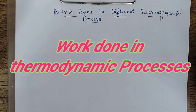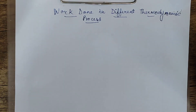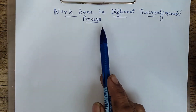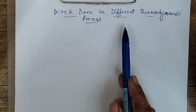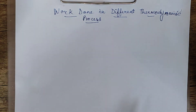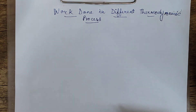Hello everyone, welcome to my channel. We are on to the fourth lecture on thermodynamics and in today's class we will be talking about the work done in different thermodynamic processes. We have discussed four types of thermodynamic processes: isobaric, isochoric, isothermal and adiabatic. So we will consider them one by one.